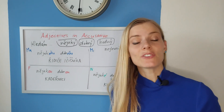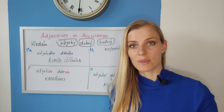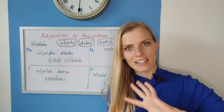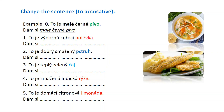Tak a to je ode mě všechno — this is all from me. Mějte se krásně, ahoj. Make sure you understood by doing this exercise — change the sentences. Please pause the video while you work on these sentences and in a couple of seconds you will see the results.